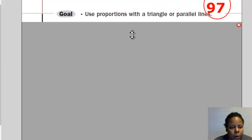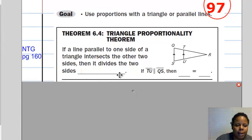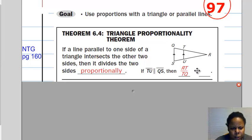So if we take a look at our notes, Theorem 6.4 says, if a line parallel to one side of a triangle intersects the other two sides, then it divides the two sides, and the key word for it is proportionally. So in this case, TU is parallel to QS. So let's see, let's look at this ratio, the ratio of RT to TQ.